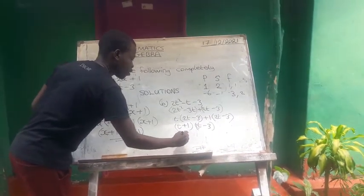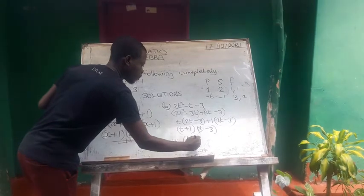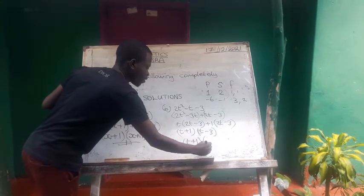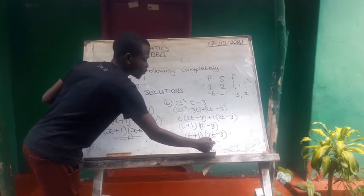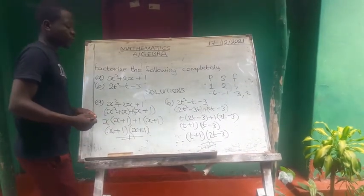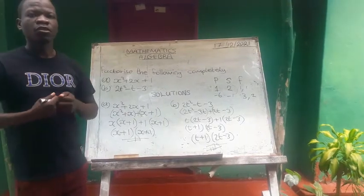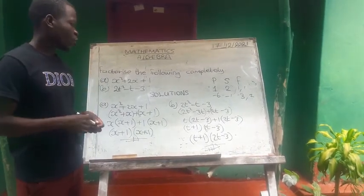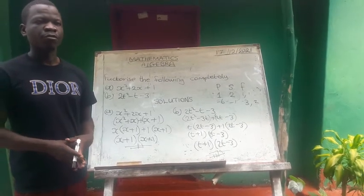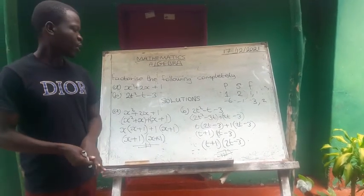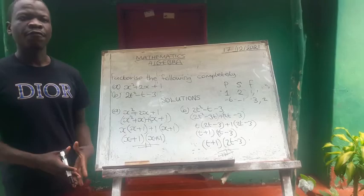Then 2t minus 3. Therefore, open bracket, t plus 1, then 2t minus 3. So this is how you should factorize quadratic expressions. If there are questions, feel free to ask or to comment on my video. Thank you.